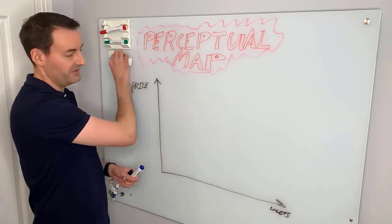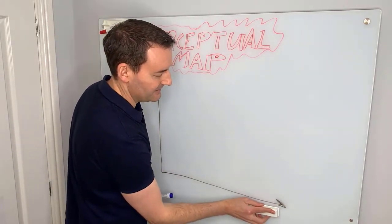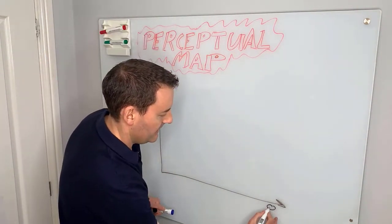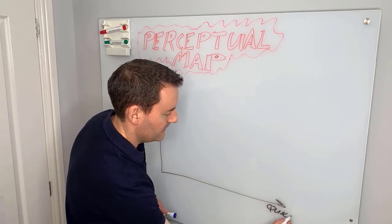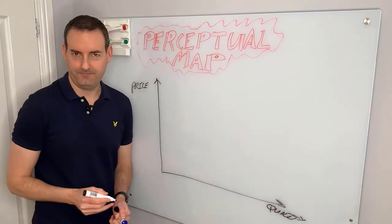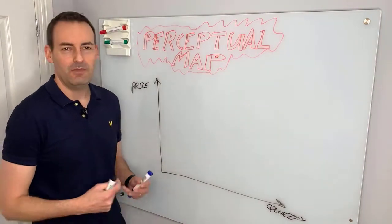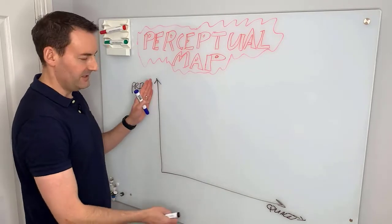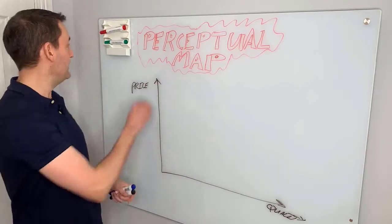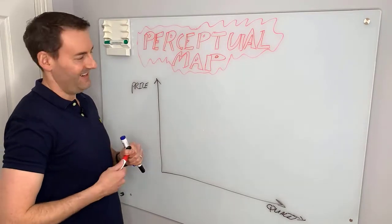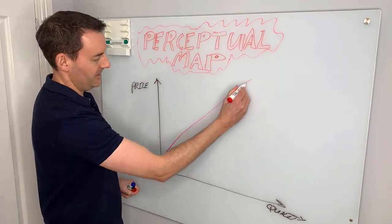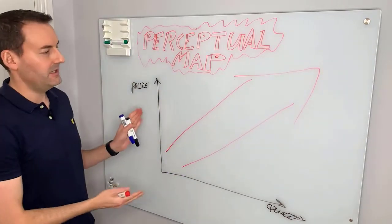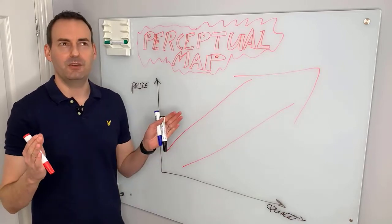Instead of looking at sales metrics like units or volume sold, on the x-axis we're going to look at quality. This is a crucial metric because people tend to buy based on quality. So you look at price versus quality, and what you're really looking for is your data to form a corridor going diagonally.